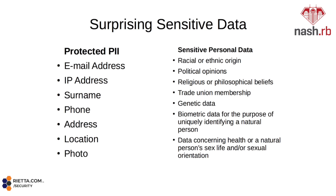Surprisingly, sensitive data includes email addresses, IP addresses, surnames, phone numbers, addresses, location, and photos — they consider all of this as sensitive as we would have considered social security numbers, without specific permission. Extra sensitive data includes racial or ethnic origin, political opinions, religious or philosophical beliefs, trade union membership, and genetic data — not just financial data. Any of this type of data has to have extraordinary security controls if your company touches it at all.